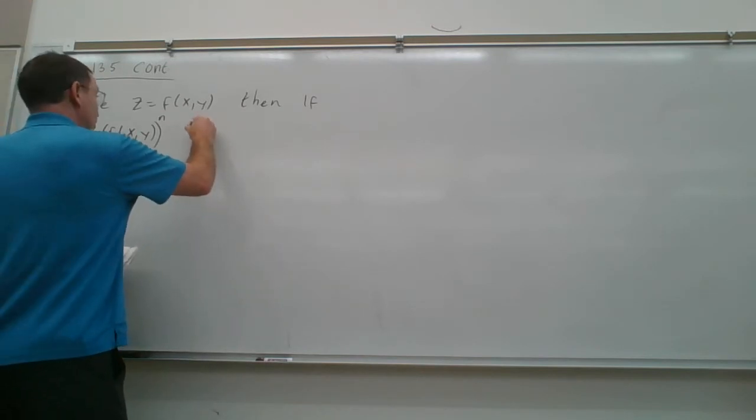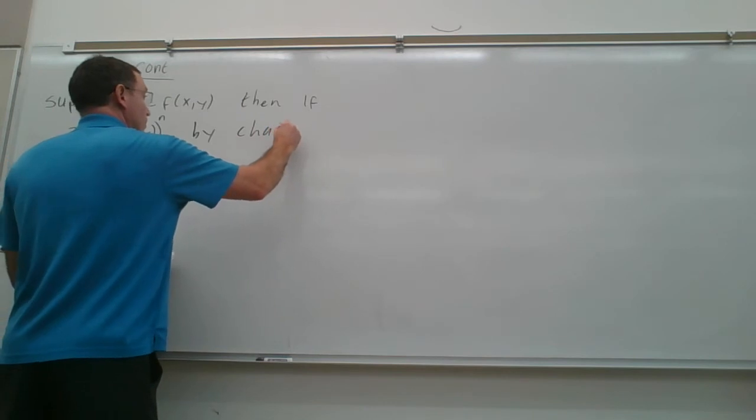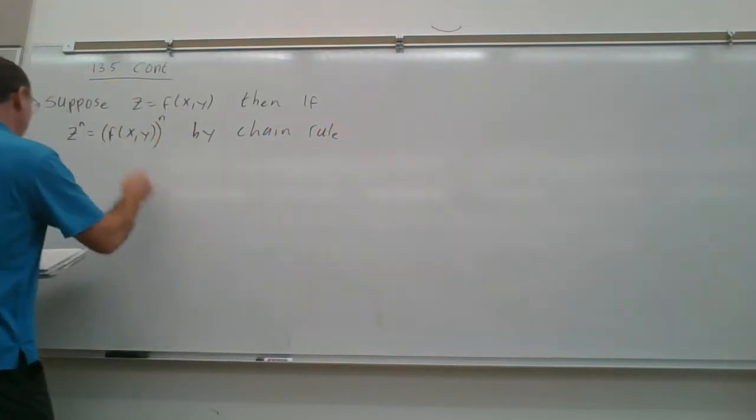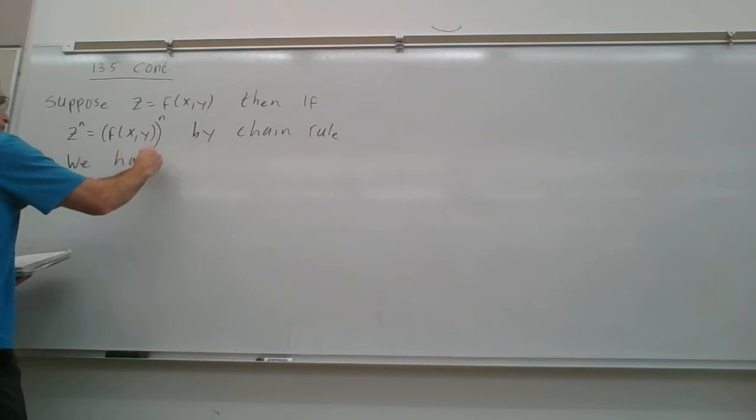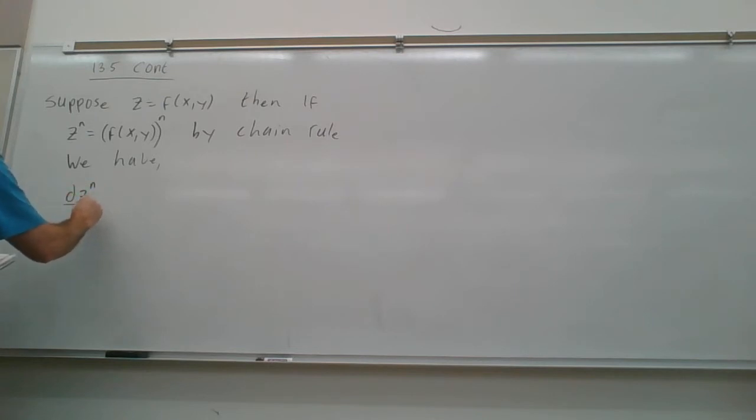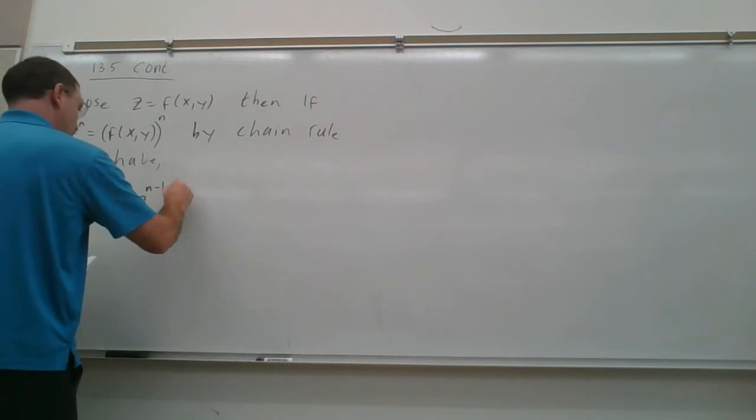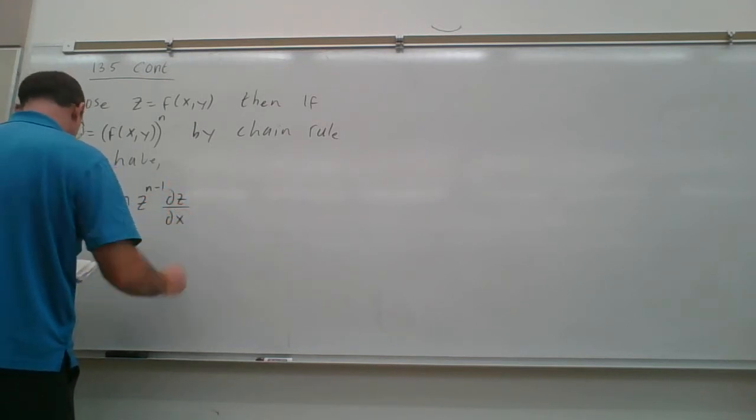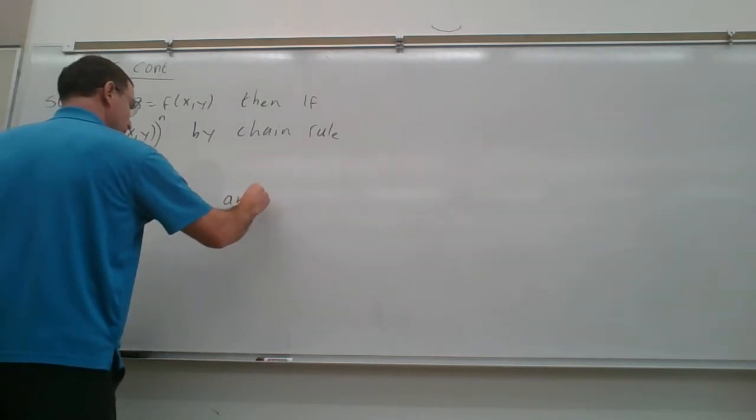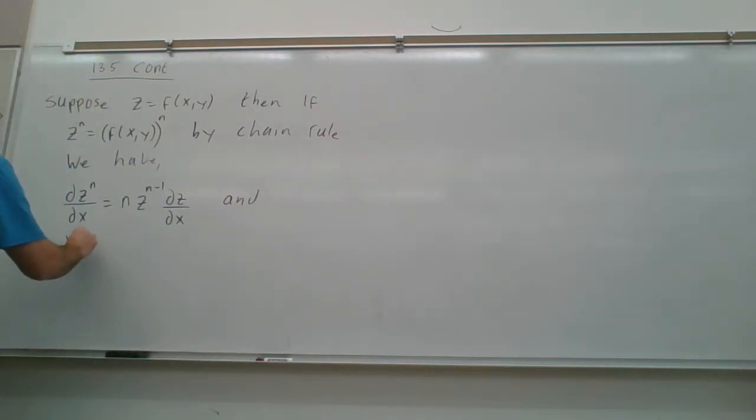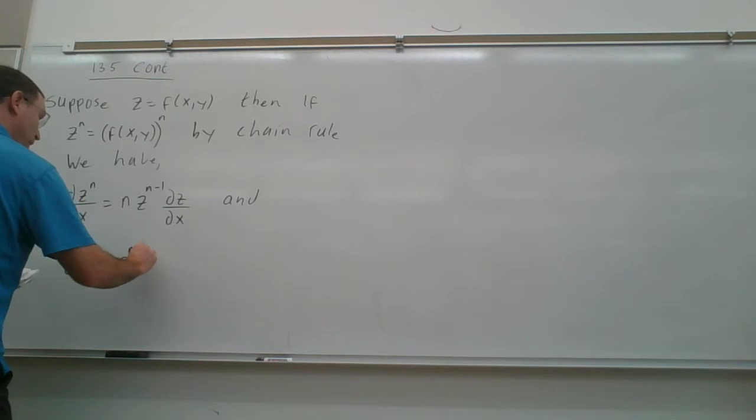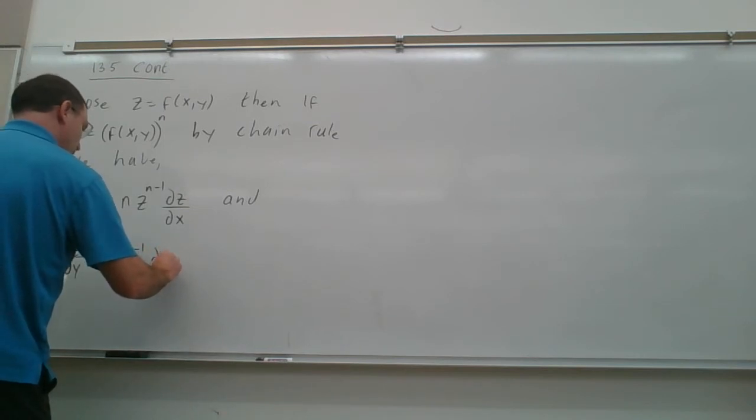And by chain rule, we have that the partial z to the n with respect to x will be, using the power chain rule, n times z to the n-1 times partial z with respect to x. And partial z to the n with respect to y will be n times z to the n-1 times partial z with respect to y.